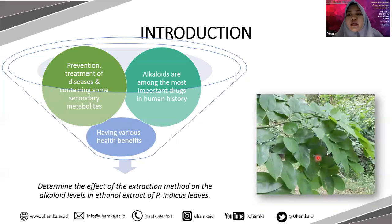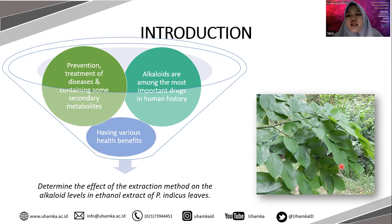Leucorpus Indicus is one of the plants that can be used for prevention and treatment of diseases. The leaves of this plant contain secondary metabolites such as alkaloids, tannins, saponins, glycosides, and flavonoids. Alkaloids are among the most important drugs in human history and contain the largest group of secondary metabolites, being extremely diverse in terms of structure and biosynthetic pathways, including more than 20,000 molecules distributed throughout vascular and nonvascular plants.